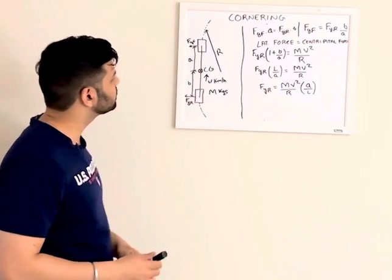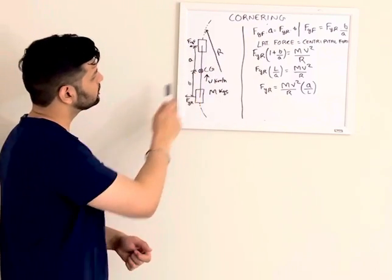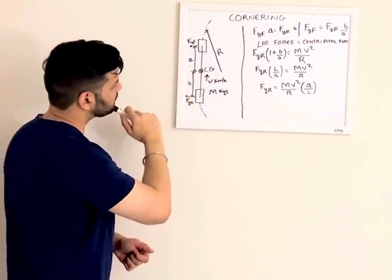So we are considering a flat track where at every point it's the same distance from the sea level. Okay, so let's get started. So this is our bicycle model. These are the front tires, this is the rear tire, this is the center of gravity.